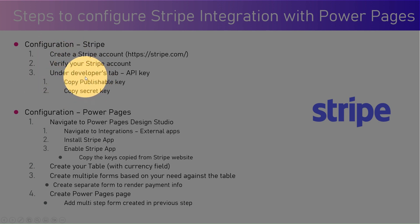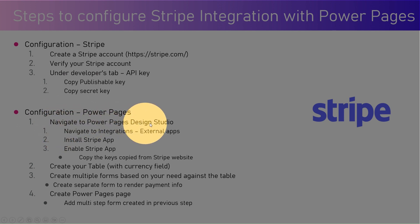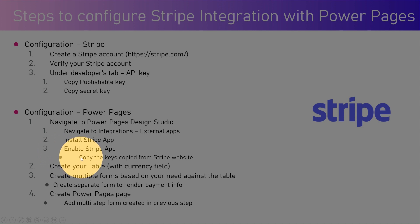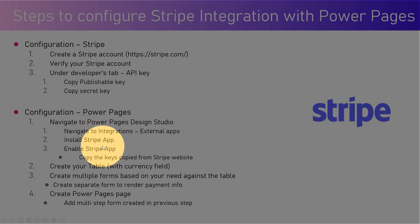Once you have those keys defined, you can use them in the Power Pages site. From a Power Pages site configuration perspective, navigate to the Power Pages Design Studio. Under Integration > External Apps, there is an option to install the Stripe app. Once you enable it, it will ask for the publishable key and the secret key — copy those keys and Stripe will be enabled in your Power Pages site.